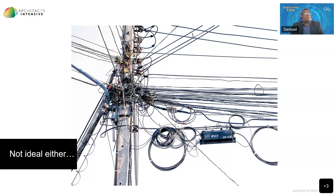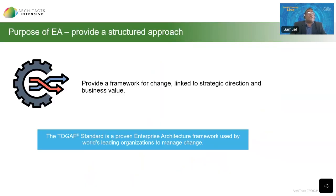That's made possible with the help of enterprise architecture. Much along the lines of constructing a building with the help of a blueprint, you would also want to build, change, or manage your enterprise with a structured approach — and that's precisely the purpose of enterprise architecture. An EA framework provides a framework for change, linked to your strategic direction, linked to your business value. It also gives you a view of the organization, which helps you to manage your complexities, manage risk, and strike the right balance between business transformation and operational efficiency.